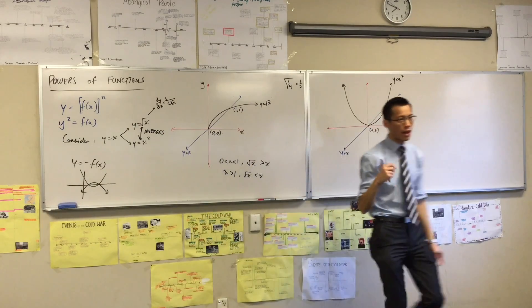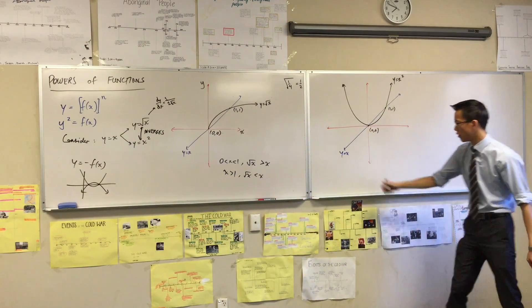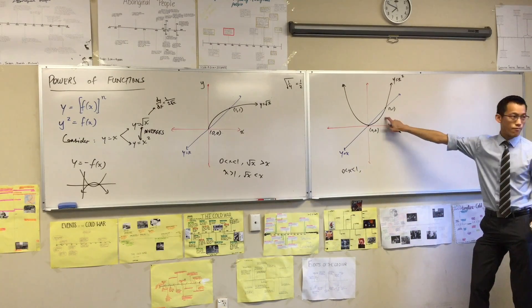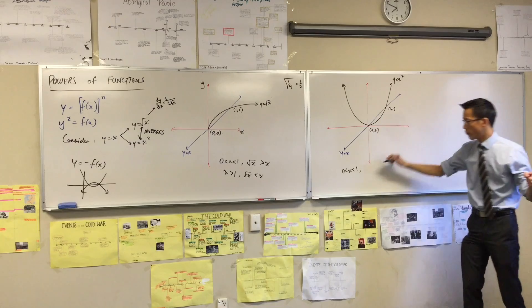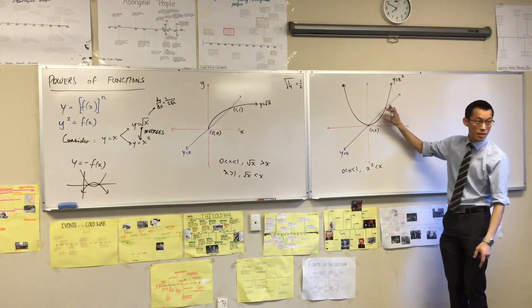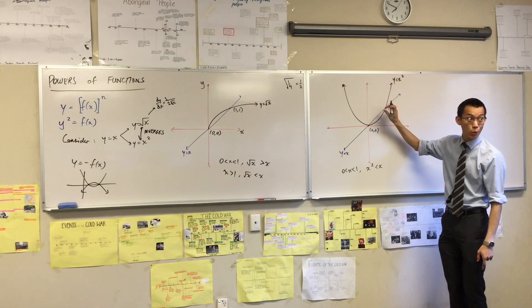Okay, what about over here? How can we explain what's going on from 0 to 1? x squared is less than x. Very good. x squared is less than x because you square a number that's little and it gets more little, right? That's the technical term.